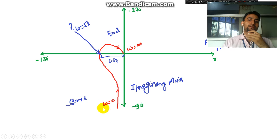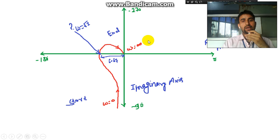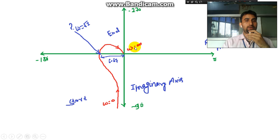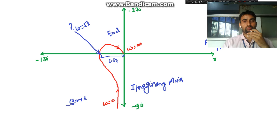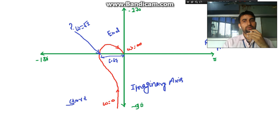To summarize: ω = 0 is the starting point and ω = ∞ is the end point of the polar plot. I hope this is clear. If you have any queries, please email me at harimohanrai@gmail.com. Thanks for watching.